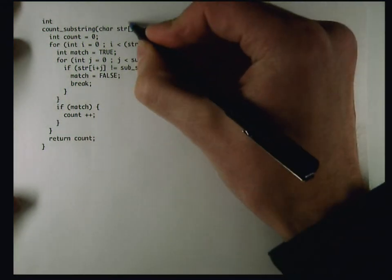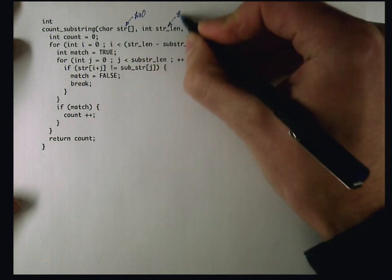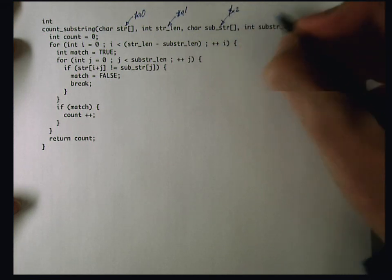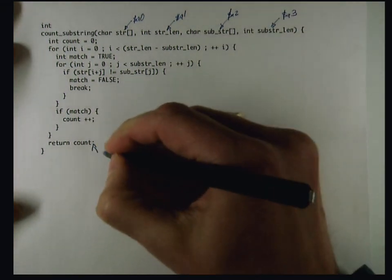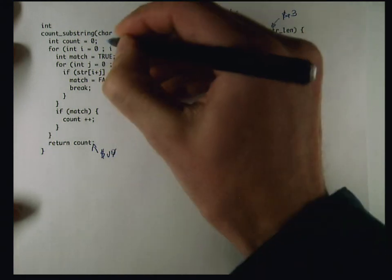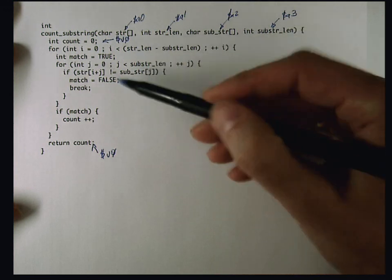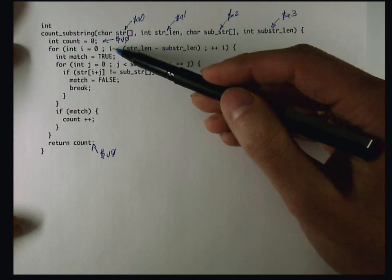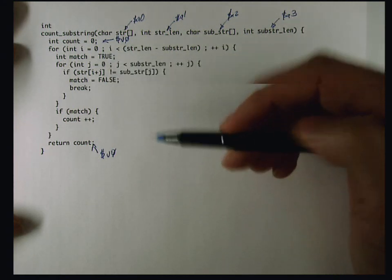So again, I'm going to figure out where all of my variables are going to live. Again, the arguments are passed in the A registers. The return value count is going to be passed back in V0, so we're going to allocate that in V0. I note again that this function doesn't call any other functions, and so as long as I don't use the callee saved registers, I can avoid allocating a stack frame.